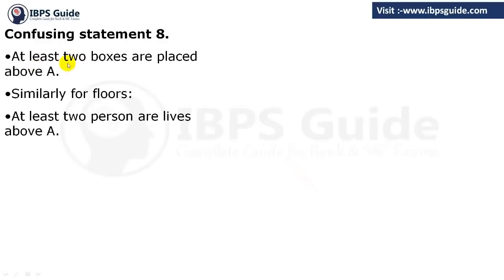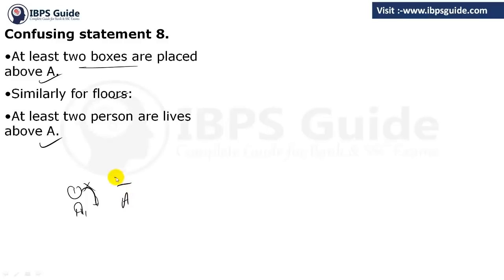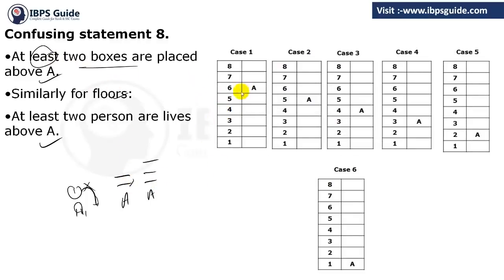The eighth statement: at least 2 boxes are placed above A. Similarly for floors: at least 2 persons live above A. There must be at least 2 persons above. At least 2 means you cannot have only 1 above A. Minimum is 2 and maximum can be anything. If A is on the 6th floor of an 8-floor building, there are 2 above. If A is on the 5th, there are 3. It can go up — 4, 5, 6, 7 are all possible. A cannot be on the 7th floor because that gives only 1 above.